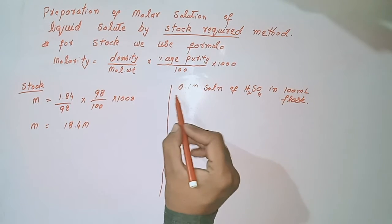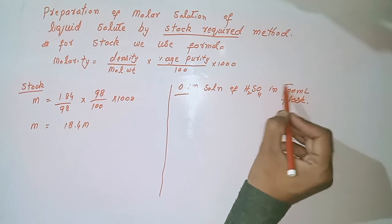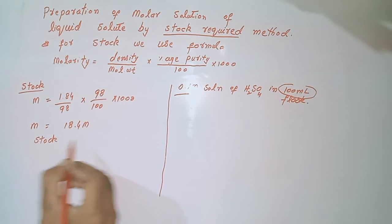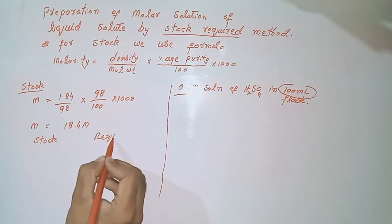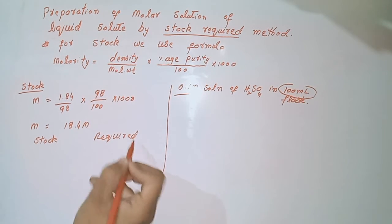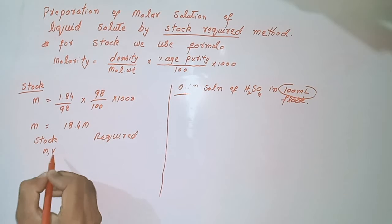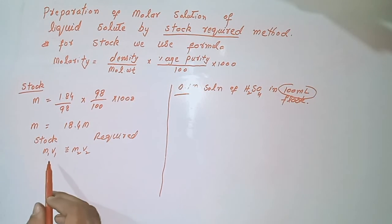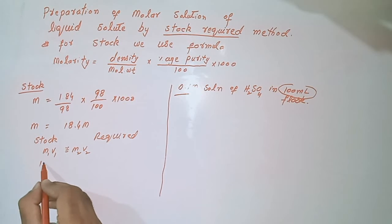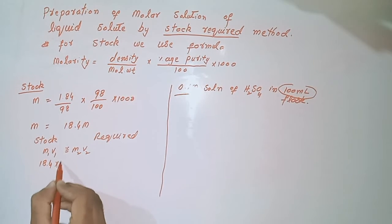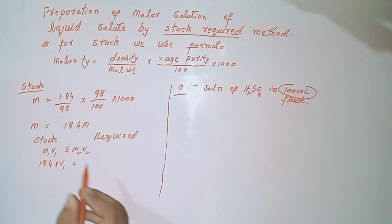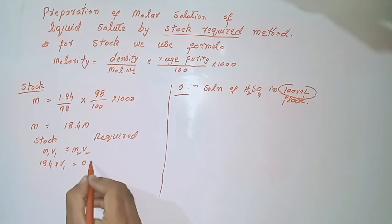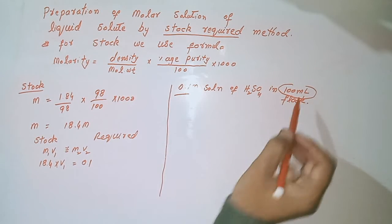Now we require 0.1 molar in 100 ml. We write the stock molarity and the required molarity separately. We use the formula M₁V₁ = M₂V₂. The molarity of the stock solution is 18.4, so: 18.4 multiplied by V₁ equals M₂. The required molarity is 0.1 and the required volume is 100 ml.